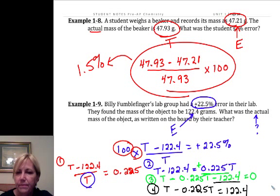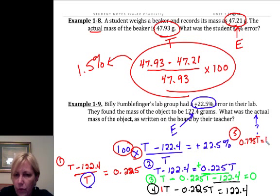Okay, now, this has an implied one in front of this. So, 1T minus 0.225T. I'm going to go up here to step five. I'm running out of room. Sorry about that. Gives me 0.775T is equal to 122.4. Now, now I'm on my last step. I want to bring this over to the other side.